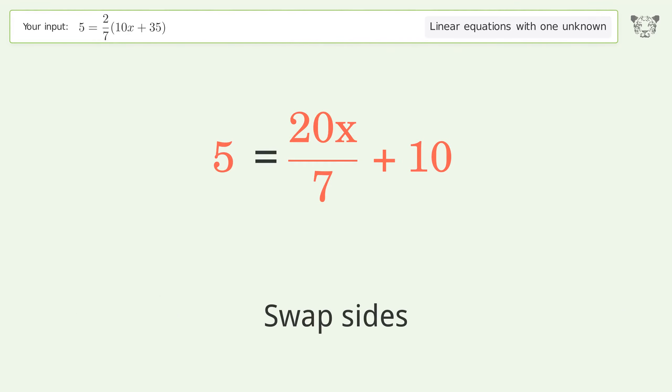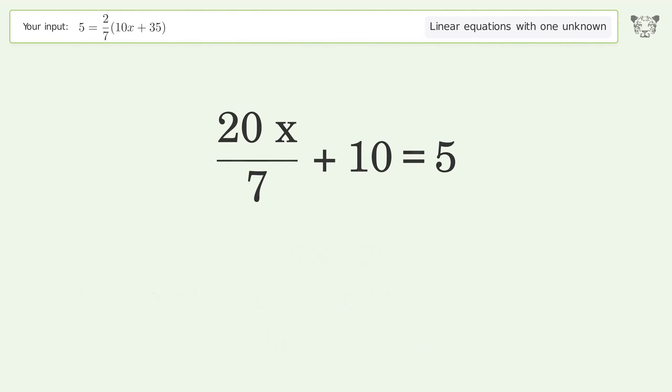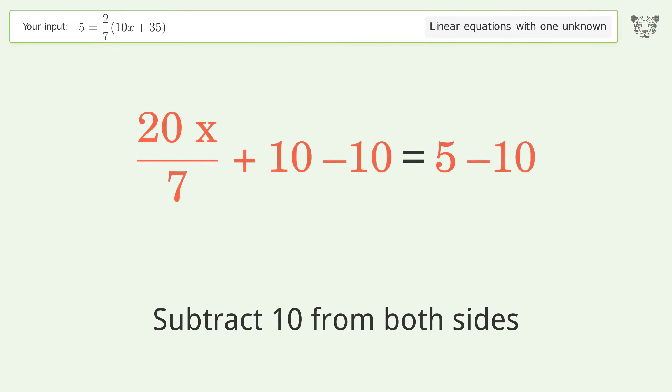Swap sides. Group all constants on the right side of the equation. Subtract 10 from both sides. Simplify the arithmetic.